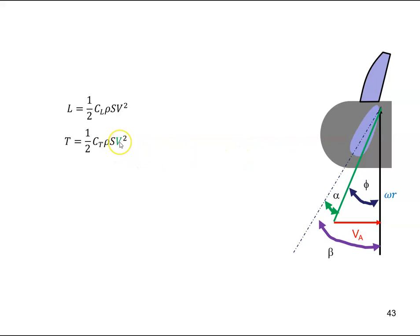The other thing that changes is the velocity. Because the air flow over the propeller blade, this wing air flow here, is the combination of the aircraft velocity and the propeller velocity of omega r. So the v squared is equal to v_a squared plus omega r squared, Pythagoras' theorem. So my thrust equation then becomes half coefficient of thrust times rho times s times v_a squared plus omega r squared.